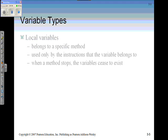Looking at the different variable types, our first type of variable is the local variable that belongs to a specific method. It's used only by the instructions that the variable belongs to, and whenever a method stops, that variable ceases to exist.